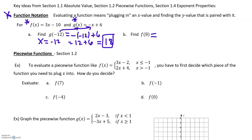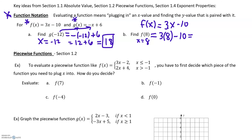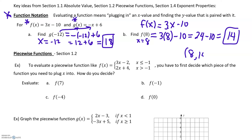Now for f of 8, we're using the function f of x equals 3x minus 10. We go to the function, replace the x with 8, and simplify. 3 times 8 is 24, take away 10, we get an answer of 14. What that means is the point (8, 14) would be on the graph of y equals 3x minus 10 — an input of 8 gives an output of 14.